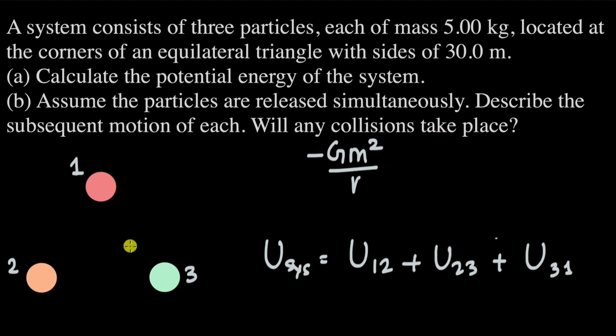The potential energy of the second and third particle is also -G m² / R, since the distance is the same in an equilateral triangle and the masses are the same. So we're multiplying this by three—adding it three times.